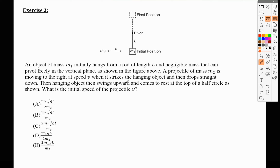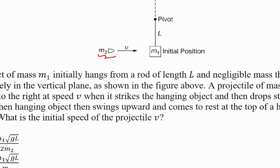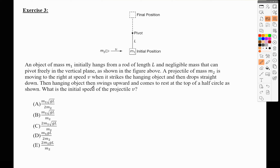An object of mass M1 initially hangs from a rod of length L of negligible mass that can pivot freely in the vertical plane. A projectile of mass M2 is moving to the right at speed V when it strikes the hanging object and then drops straight down. The projectile won't become embedded in M1 — it will fall freely. We need to divide the problem into two parts: conservation of energy and conservation of linear momentum. First, let's apply the conservation of linear momentum.